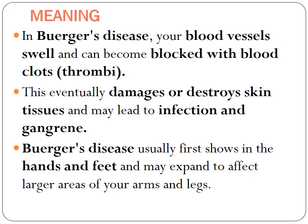What is the meaning of Buerger's disease? All this time we have seen about the blood vessels — what happens due to weakness and if there is any kind of disease within it, the blood flow is not being restored or does not happen properly. In Buerger's disease, the blood vessels will start to swell and can become blocked with blood clots, called thrombi or thrombus. This can eventually damage or destroy the tissues and may lead to infection or gangrene. Buerger's disease usually first shows in the hands and feet and may expand to affect the large areas of the arms and legs.